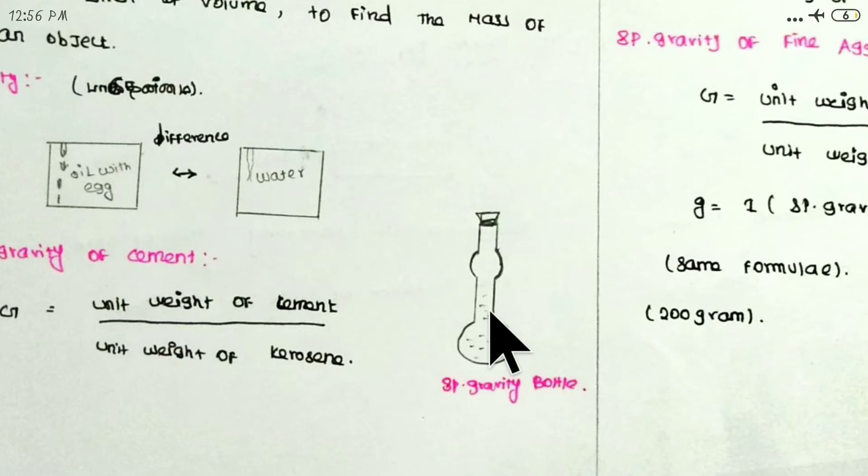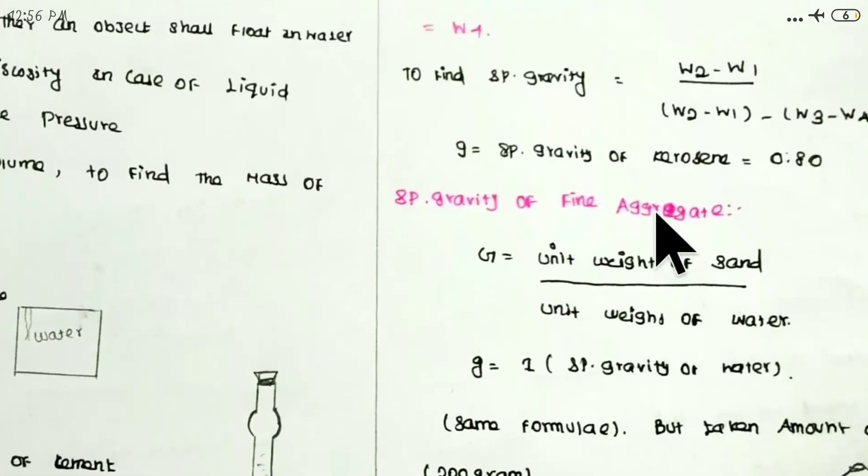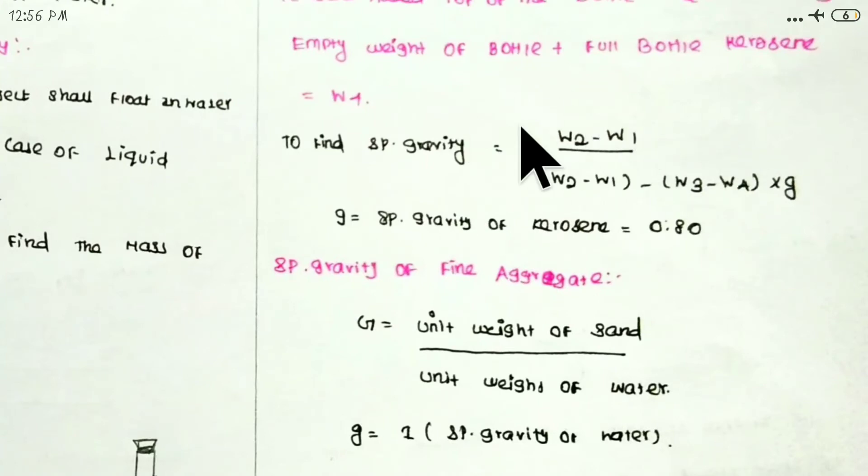The weight W1 is the empty weight of the bottle. Then, the weight W2 is the weight with 50 grams of cement. Next, we add the bottle full of kerosene and get weight W3. Then we add the bottle with kerosene to get W4.